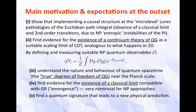One is additionally interested in physical properties of the theory. One hopes to develop sufficiently quantitative computational methods to measure suitable non-perturbative quantum observables — evaluating them on the ensemble. First: understand the nature and behavior of quantum space-time near the Planck scale, and understand the true degrees of freedom that govern the dynamics there. Second: find evidence of the existence of a classical limit, needed to reproduce results from GR on suitably long scales — very non-trivial for non-perturbative approaches. And of course to find a quantum signature that might lead to new physical predictions.